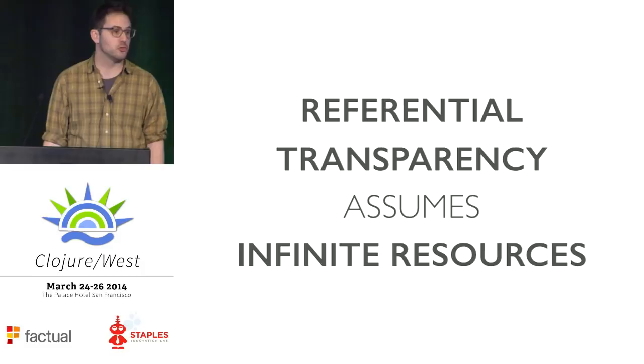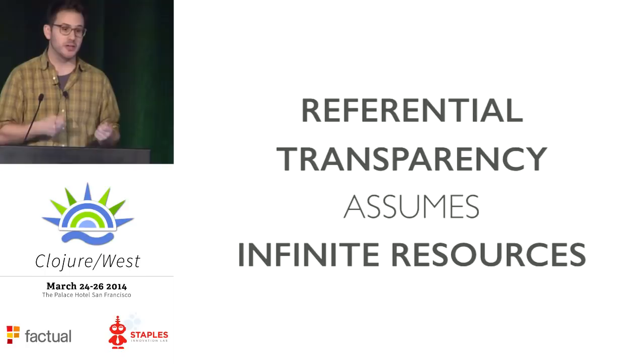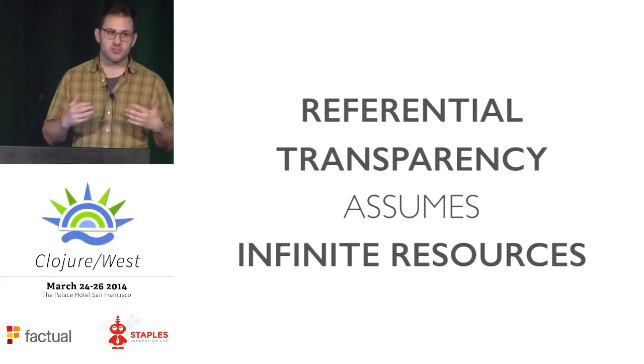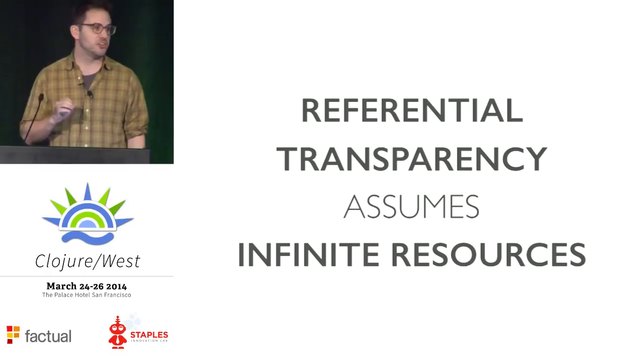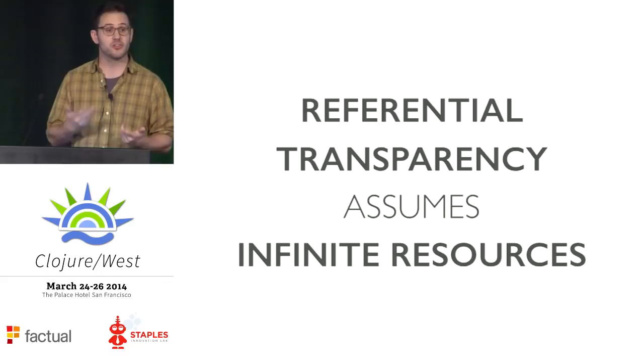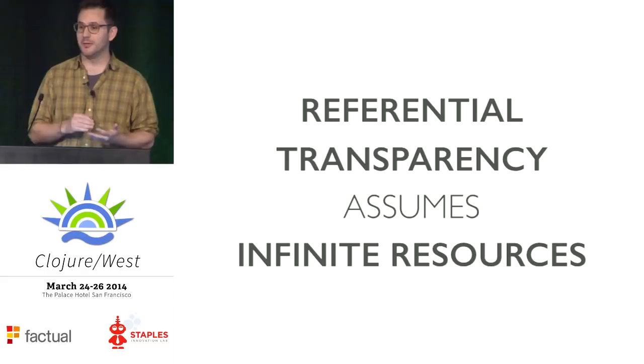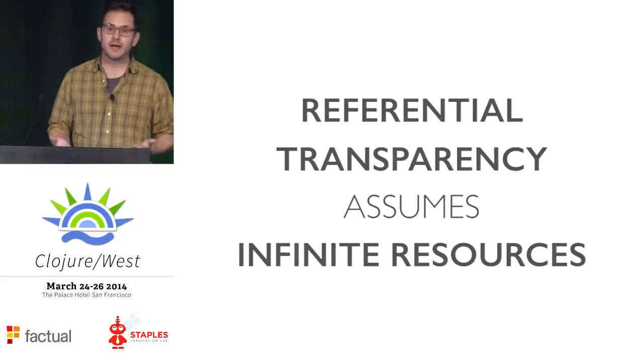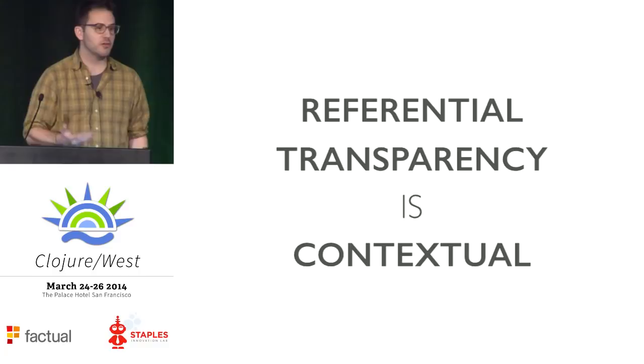And this is true of most applications of referential transparency. Memoization is only sound if we have enough memory to hold all possible inputs and their associated values. Parallelization is only sound if we don't exhaust one of the many shared fixed resources. Specifically in the case of a Ring HTTP server, we can only treat all the requests as isolated from each other if we don't exhaust bandwidth, file throughput, file descriptors, main memory, or computational capacity. If we hit any of these boundaries, it starts to break down.